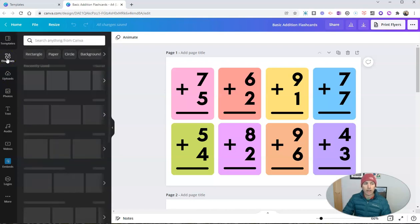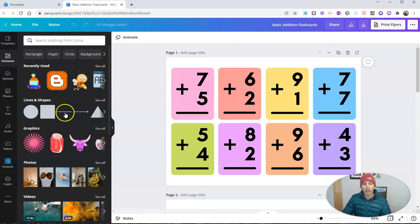So to do that, let's add in some elements. And the element I'm going to use is this line. And I'm going to just click and drag and put that in place there. So I have a little guide for when I go to print these out and cut them out.